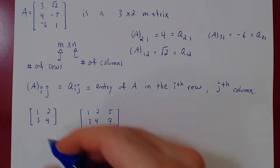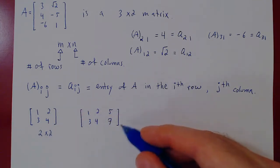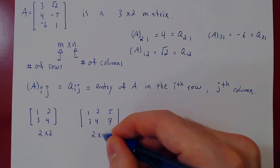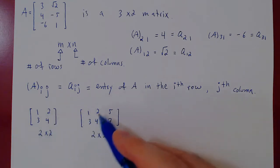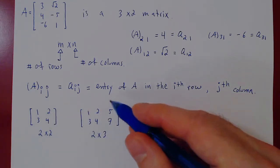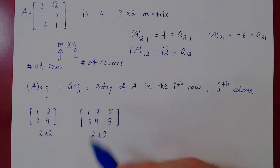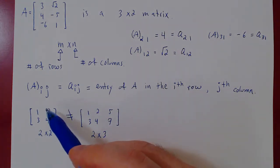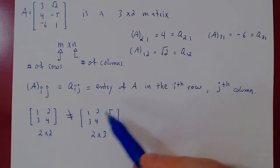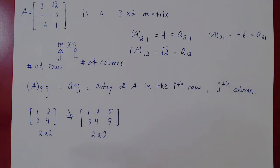That's our first criteria: for matrices to be equal, they have to have the same size. Now consider the matrices 1, 2, 3, 4 and 1, 3, 4, 2. They are both 2×2 matrices and have the same entries, but the entries are not in the same position. The entry in row 1, column 2 is 2 in the first matrix, but 3 in the second. So they are not equal.